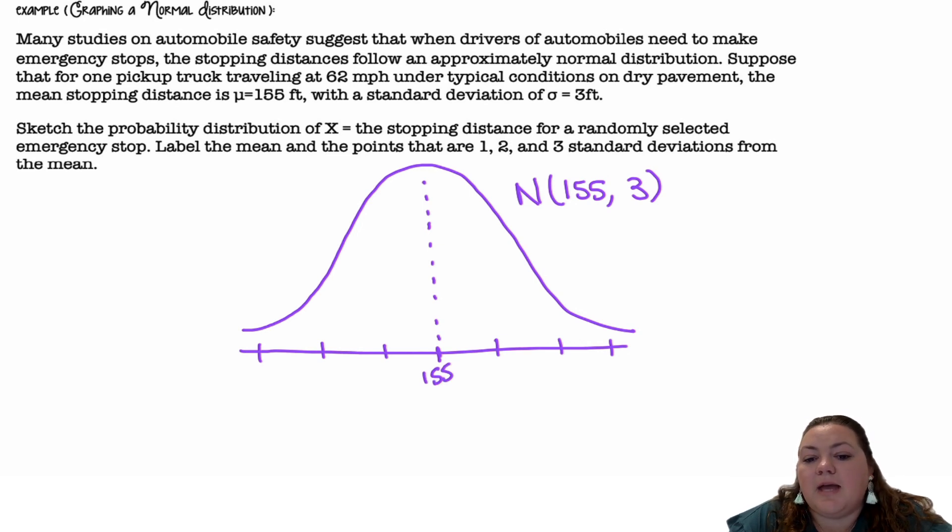As I move to the right, I'm going to be adding 3 each time. So 155 plus 3 is 158, 158 plus 3 is 161, and then 164. As I move to the left, I'm going to subtract 3 each time. So 155 minus 3 is 152, minus 3 is 149, minus 3 again is 146. So there's my normal distribution.